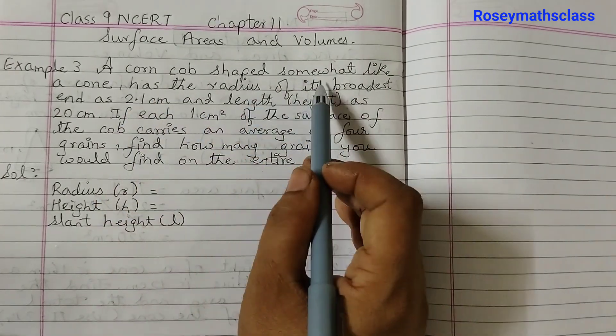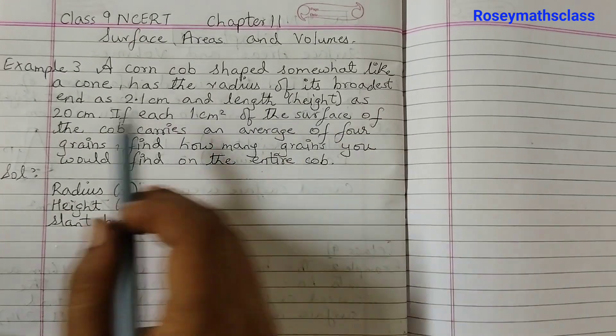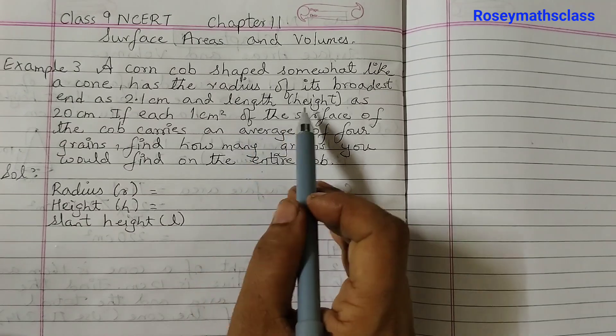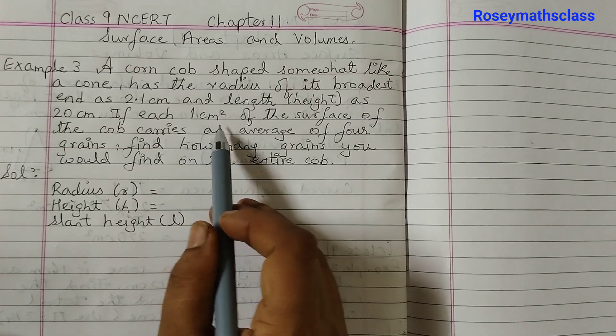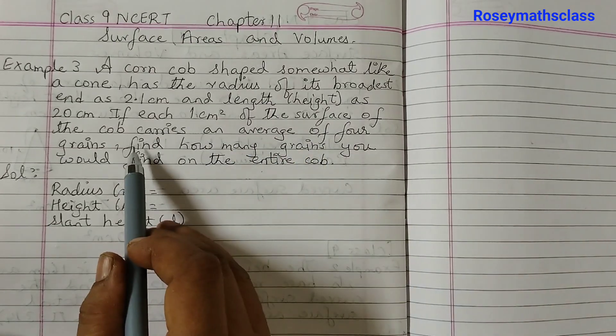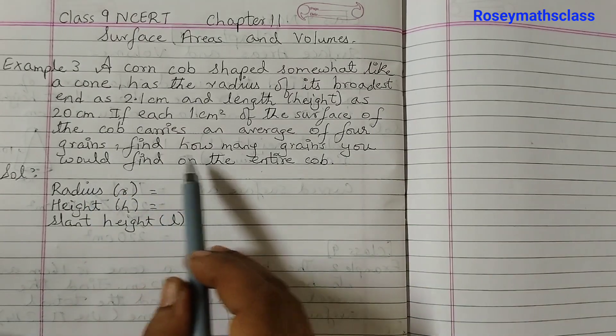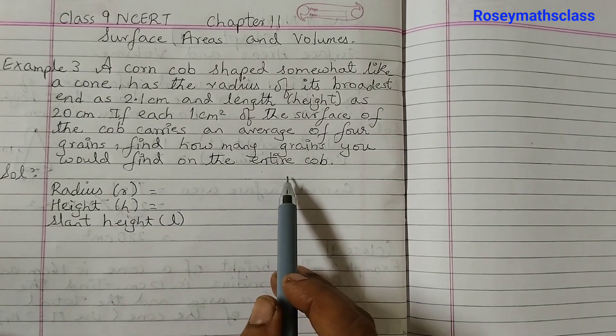A corn cob shaped somewhat like a cone has the radius of its broadest end as 2.1 cm and length, which is the height, as 20 cm. If each 1 cm² of the surface of the cob carries an average of 4 grains, find how many grains you would find on the entire cob.